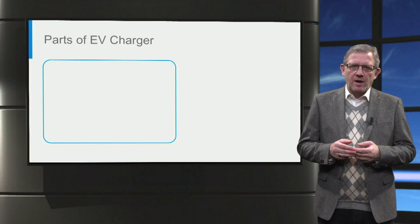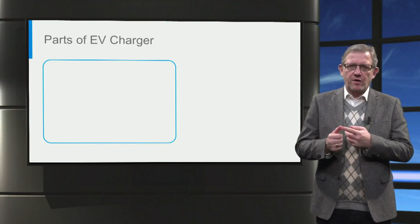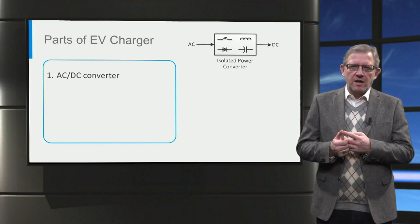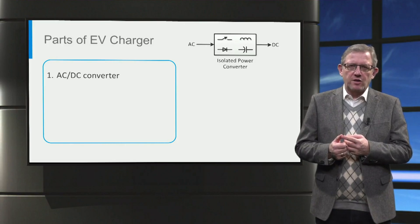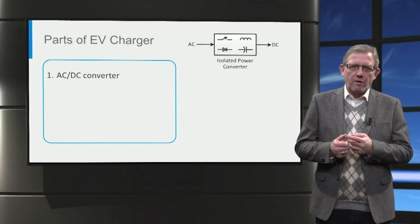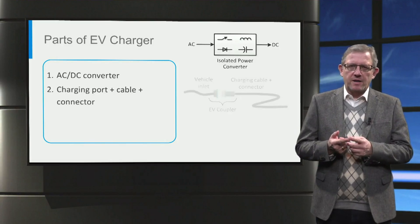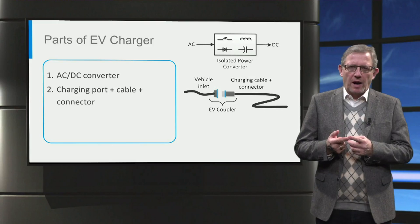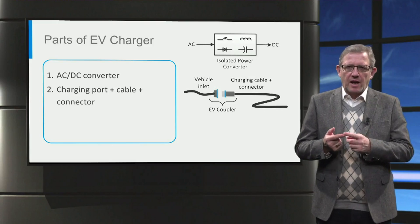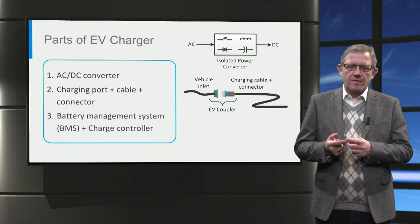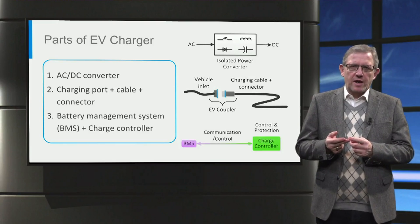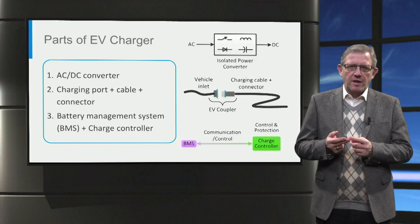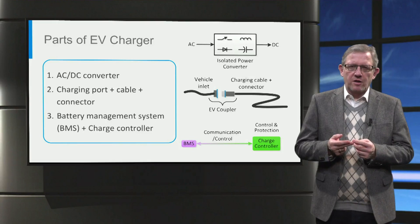An electric vehicle charging system has three main parts. The first part is the AC to DC power electronic converter, which converts the power from AC to DC. The second part is the charging cable with a connector that is used to feed power from an external power supply to the electric car via the vehicle inlet. Finally, a charge controller on the external power supply side and the battery management system on the vehicle side are responsible for the communication, protection and control of the charging process.